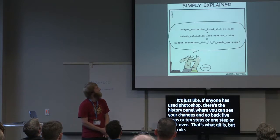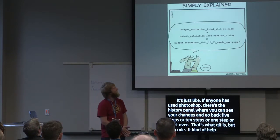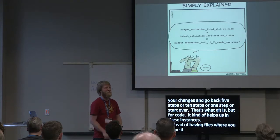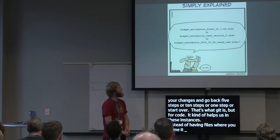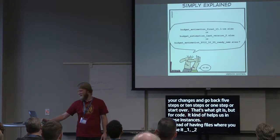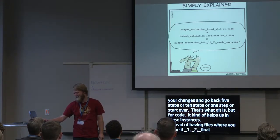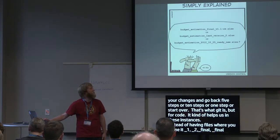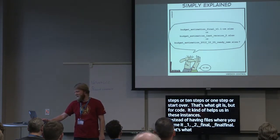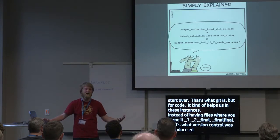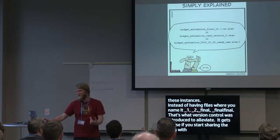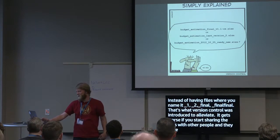Version control helps in situations where you might otherwise name files things like 'underscore_V1, underscore_V2, underscore_V2_final_final_final.' That's kind of what version control was introduced to alleviate — having multiple copies of the same file, which gets even worse when you start sharing files with other people, because then they have their own copies and nobody knows which is the most recent one.